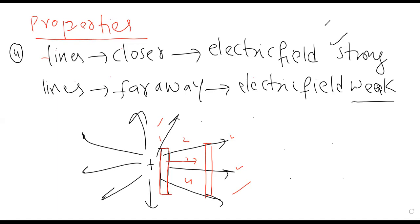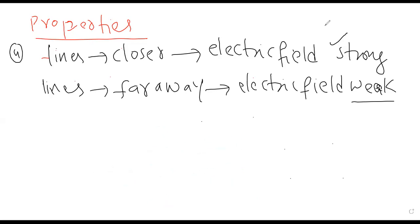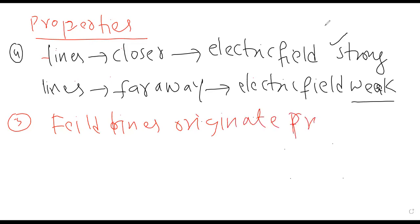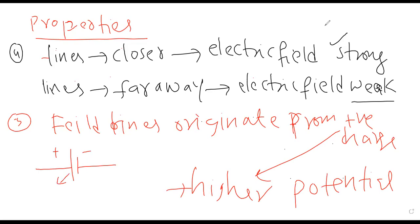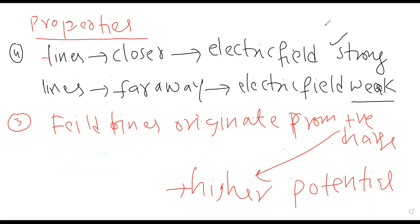Iske baad last two properties: field lines originate from positive charge — jo field lines hoti hain woh originate hoti hain positive charge se. Positive charge se kyun originate hoti hain? Because positive charge contains higher potential as compared to negative. Battery ki symbol mein bhi badi line positive hoti hai — because positive charge is at higher potential. To positive charge se lines bahar niklein gi aur negative charge ki baat karein to lines andar ki taraf aayengi.